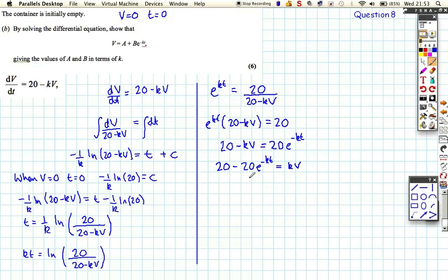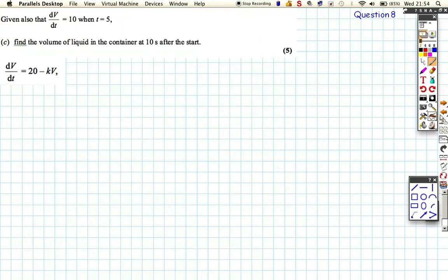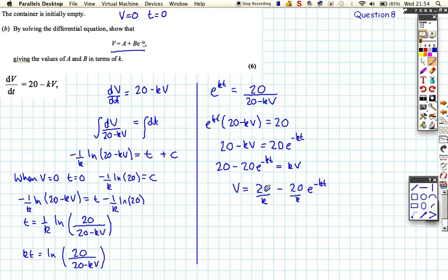And then we just have to divide through by k, so then we get V equals 20 over k minus 20 over k e to the minus kt. So we've got the values of a and b in terms of k, they're both actually 20 over k. And we've shown that it now looks exactly like we were asked here. Just to the point, key point actually, they're not both the same. a is positive 20 over k and b is minus 20 over k. You could be funny about that if you wanted to, so just be careful about that.